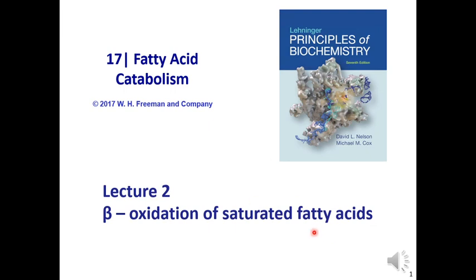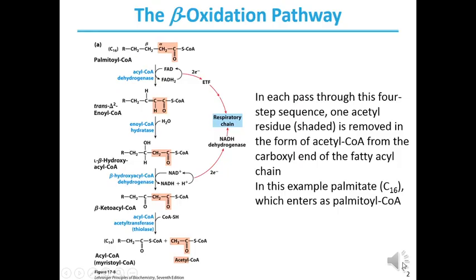In this lecture, we will look in detail at the beta-oxidation pathway of saturated fatty acids. The beta-oxidation pathway is essential for the conversion of fatty acyl-CoA into acetyl-CoA. Shown here on the left is the beta-oxidation pathway of palmitoyl-CoA. Palmitoyl-CoA is a 16-carbon saturated fatty acyl-CoA, and it undergoes beta-oxidation through four different steps, with four different enzymes involved in this process. In each pass through this four-step sequence, one acetyl residue shaded in orange is removed in the form of acetyl-CoA.